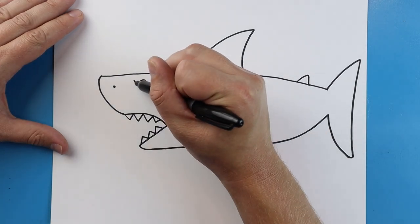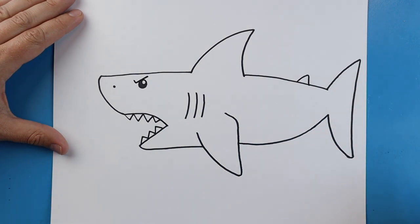And then I'm going to make a little line that's going to go down and then up for a little check mark above the eye.